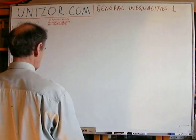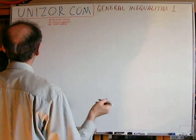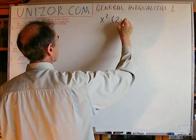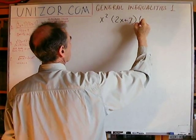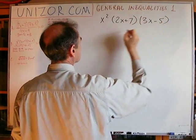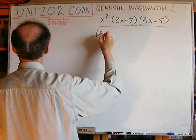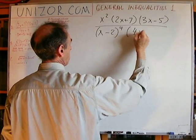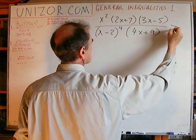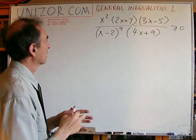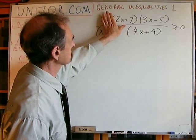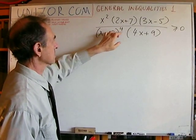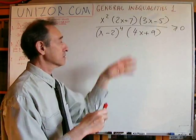The second problem is very similar to the first. However, there are a couple of interesting details. This is exactly the same expression as before, but the numerator is multiplied by x² and the denominator is multiplied by (x − 2) to the fourth power. Well, this looks much scarier, but let's just think about it. Don't forget that x² is always non-negative.